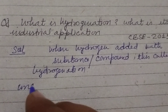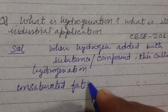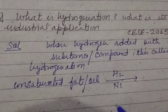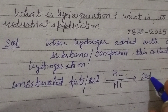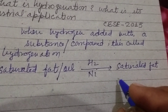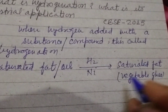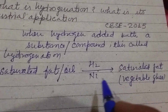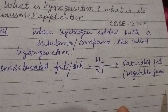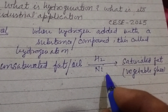Unsaturated fat or oil reacts with hydrogen in the presence of nickel, and we get saturated fat — that is called vegetable ghee. This is the industrial application of hydrogenation: unsaturated fat or oil can easily be changed into saturated fat, called vegetable ghee, by the process of hydrogenation in the presence of a nickel catalyst.